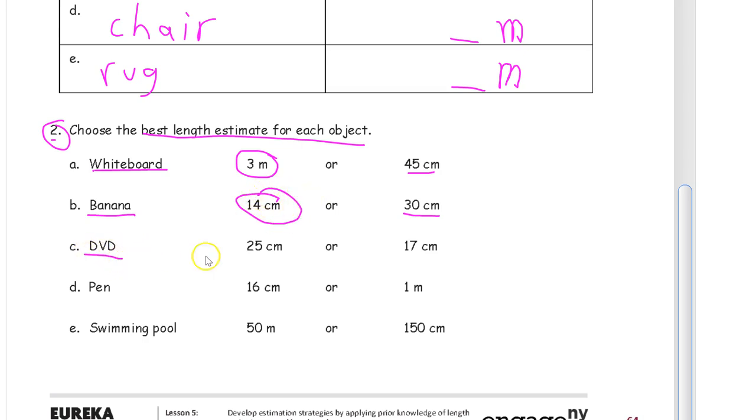A DVD. So just like the disc, right? 17 would be about half of a ruler. 25 would be most of a ruler. 25 seems big for me. So I think 17 is closer.